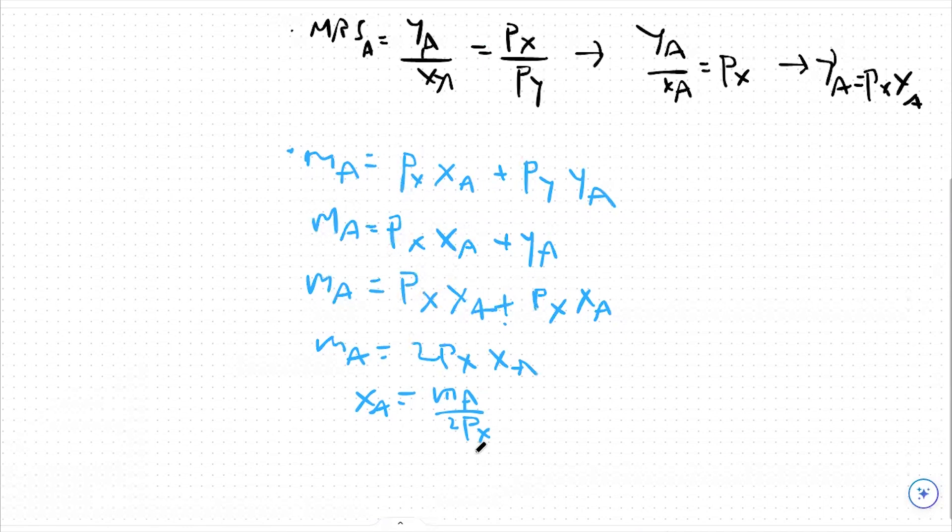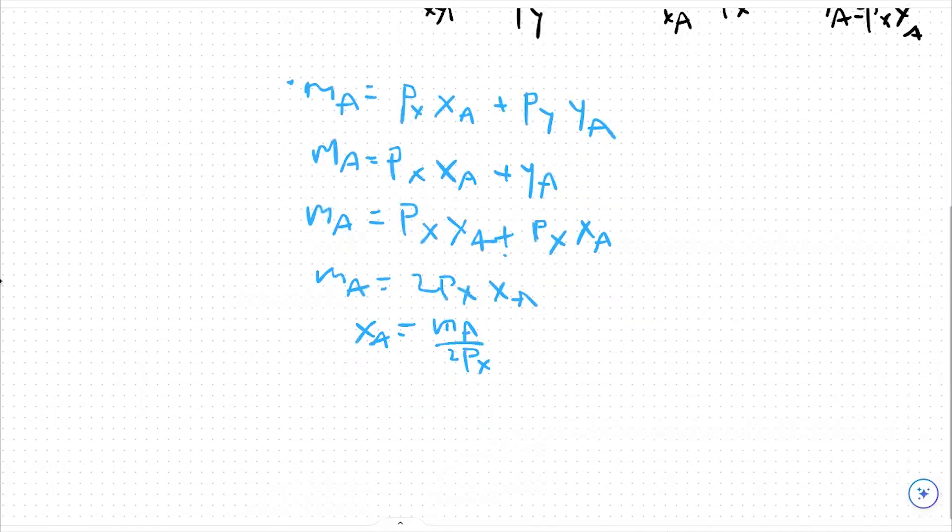So we're going to do a similar process to find the amount of yA we would purchase. What we're going to do for that is I'm going to switch colors again.